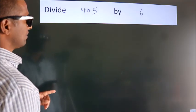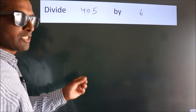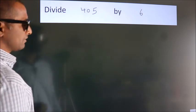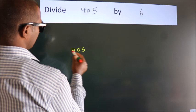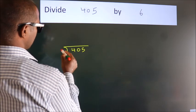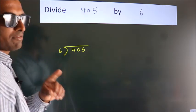Divide 405 by 6. To do this division, we should frame it in this way: 405 here, 6 here. This is your step 1.